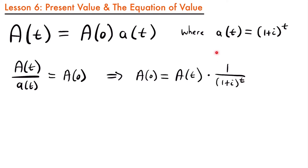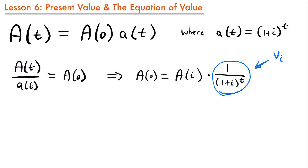And so what is this? This is an equation that if I know an amount in the future that I want to have, and I know my interest rate, and I know how far in the future I want that amount, I can find how much I need to deposit today, which would be my present value. When we use the present value formula, we represent this part with different notation — we write it as V sub i to the t — and we call this our present value factor.